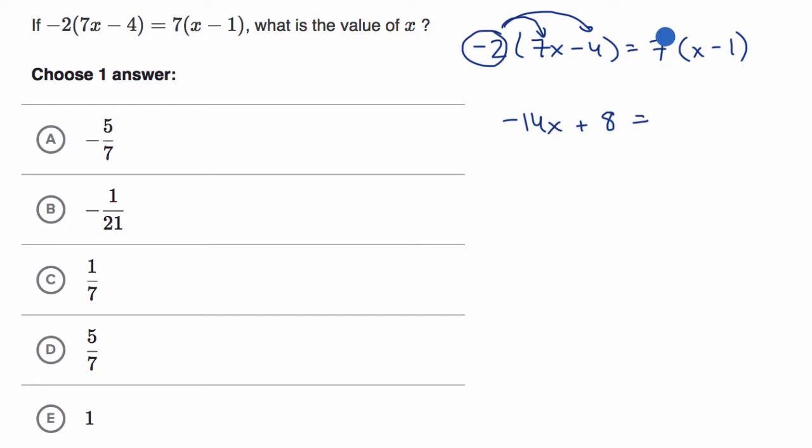And that's going to be equal to, we now distribute the seven onto the x minus one. Seven times x is seven x. Seven times negative one is negative seven.